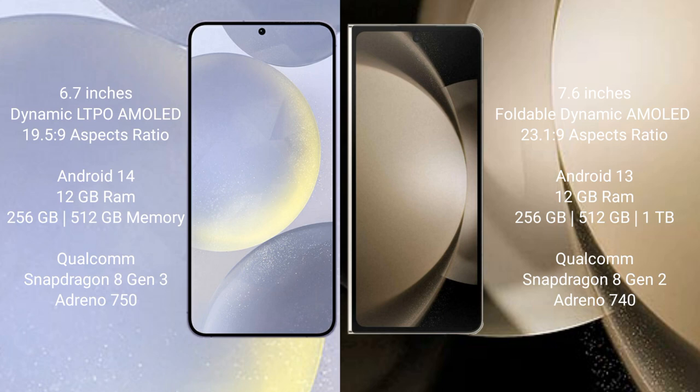Samsung Galaxy S24 Plus comes with 12GB RAM and 256GB or 512GB internal storage, powered by a Qualcomm Snapdragon 8 Gen 3 processor and Adreno 750 GPU. Samsung Galaxy Z Fold 5 comes with 12GB RAM and 256GB, 512GB, or 1TB internal storage, powered by a Qualcomm Snapdragon 8 Gen 2 processor and Adreno 740 GPU.